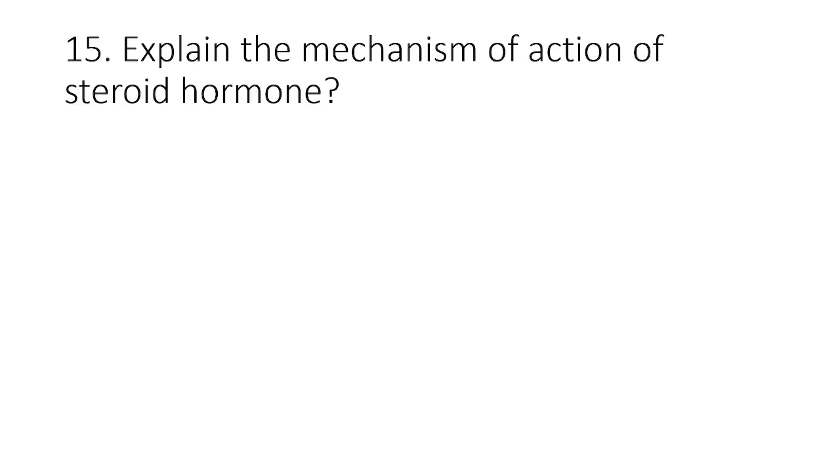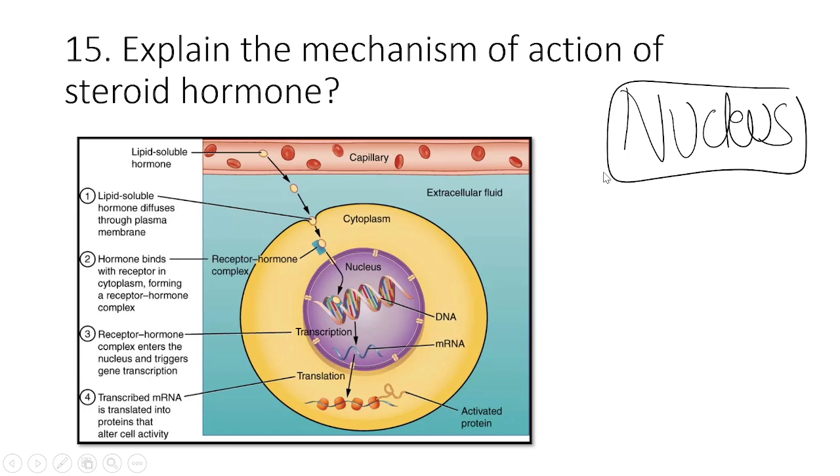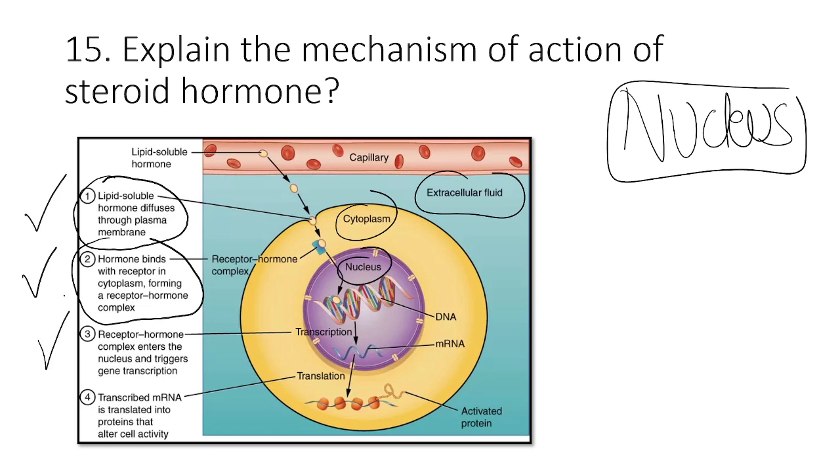Explain the mechanism of action of steroid hormone. Steroid hormone basically acts on nucleus. It has a nuclear receptor. In exam, you need to write this diagram. You need to mention nucleus, cytoplasm, extracellular fluid. Lipid soluble hormone diffuses through the plasma membrane. Then it binds with the receptor in the cytoplasm, forming receptor hormone complex. This complex enters the nucleus, triggers the gene transcription. That means there is more and more formation of mRNA, which is translated into proteins that alter cell activity. If you mention this, you will get 3 out of 3. The receptor present is nuclear receptor.